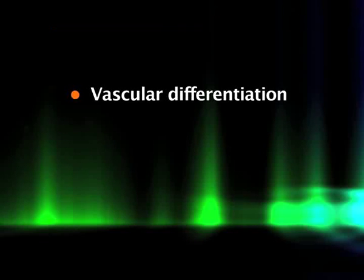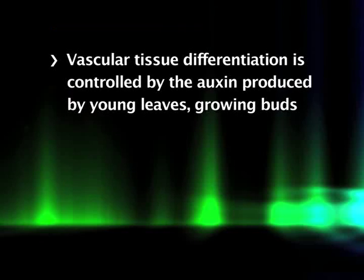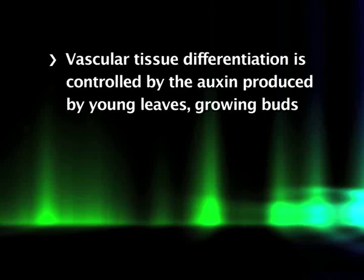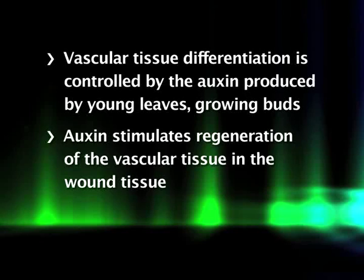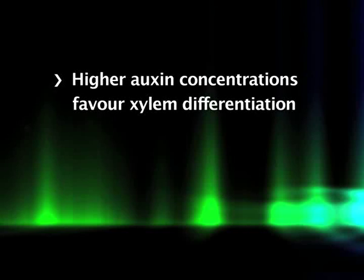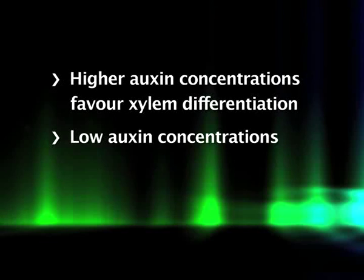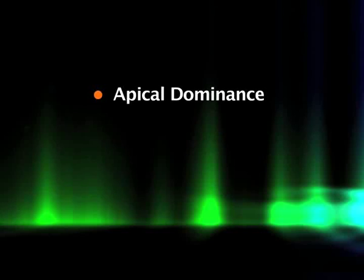The differentiation of new vascular tissue is controlled by auxin produced by young leaves and growing buds. The regeneration of vascular tissue in wound tissue is also stimulated by auxin produced by the young leaf just above the wound. At higher concentrations, auxin stimulates the formation of both xylem and phloem, but xylem differentiation is more favored, whereas low auxin concentrations favor phloem differentiation.